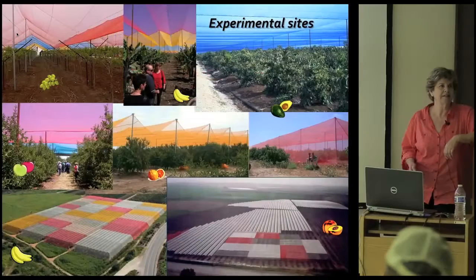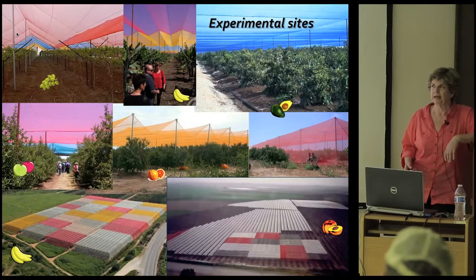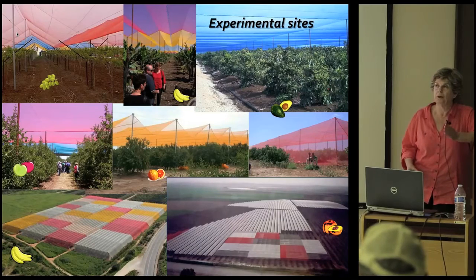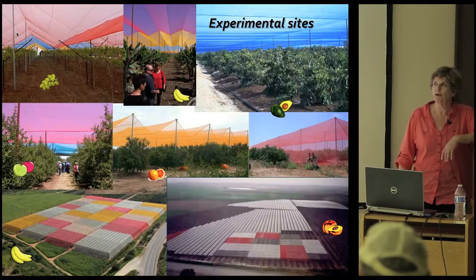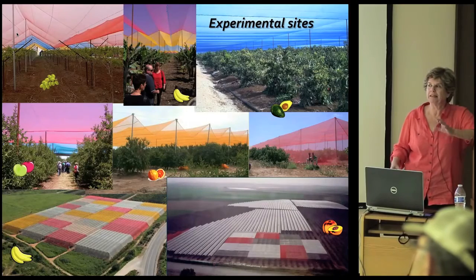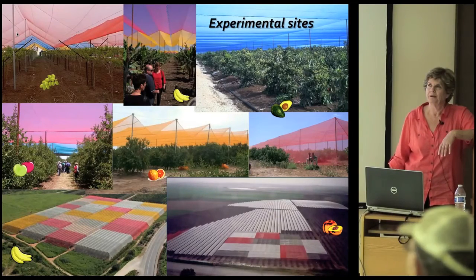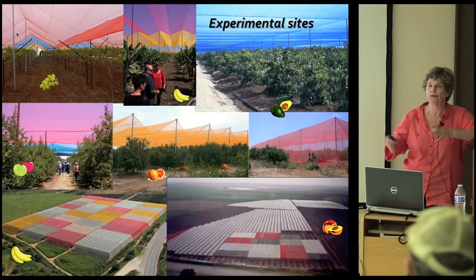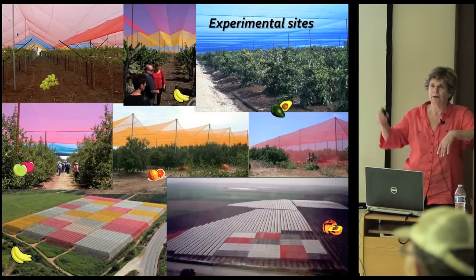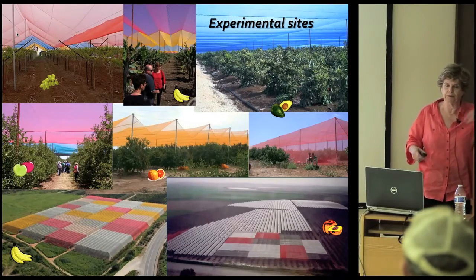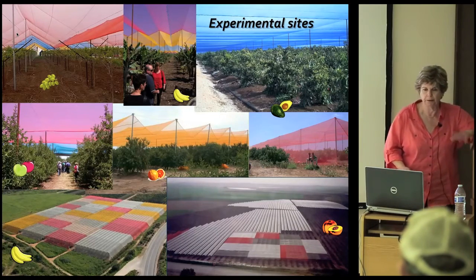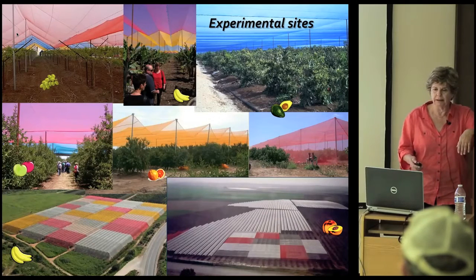These are examples of our experimental sites in different crops: table grapes, bananas, avocado, citrus, apples, peaches, and more. The experimental sites are usually quite large. We need large-scale sites because of a lot of overlapping in the light — not only direct light that overlaps from one net treatment to another, but also scattered light that moves even further. So we really have to set up large-scale experimental sites.